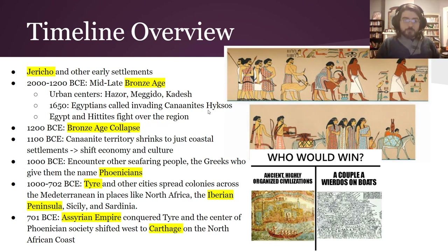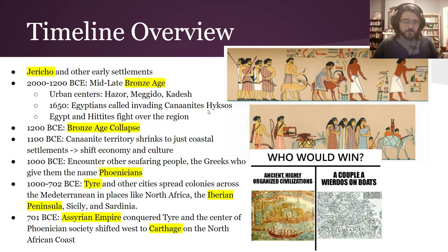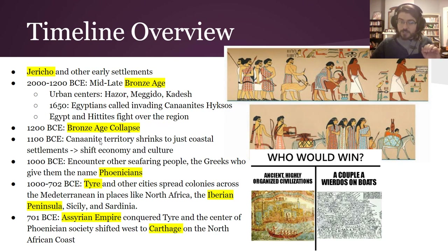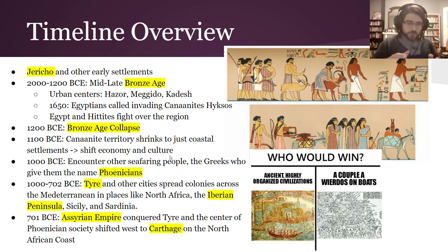The Bronze Age Collapse is like a big reset button, and after that big changes happen. We have the emergence of the two civilizations we're going to study in this unit — the Phoenicians and also the Israelites in a later video. During this timeframe, the Canaanite territory shrinks to just coastal settlements. We talk about Phoenicians here — there's a whole shift in the economy and culture where they become a trading maritime coastal people.